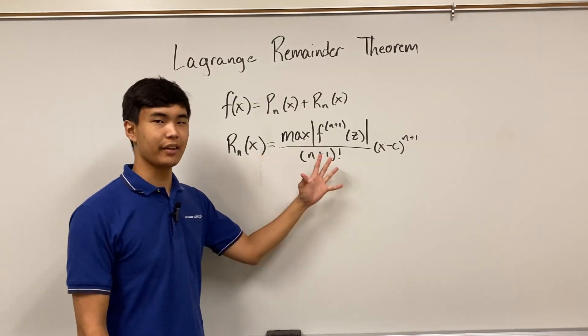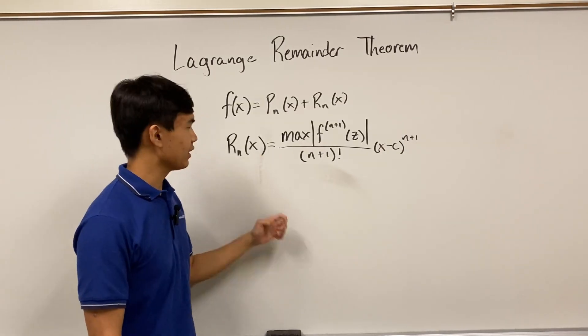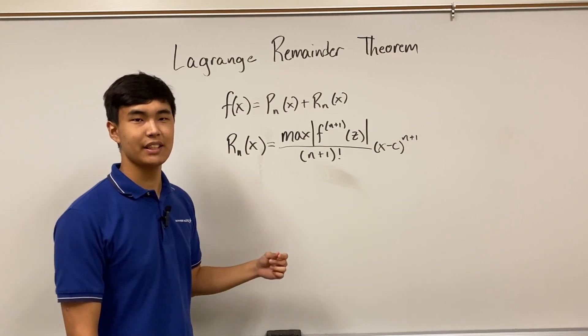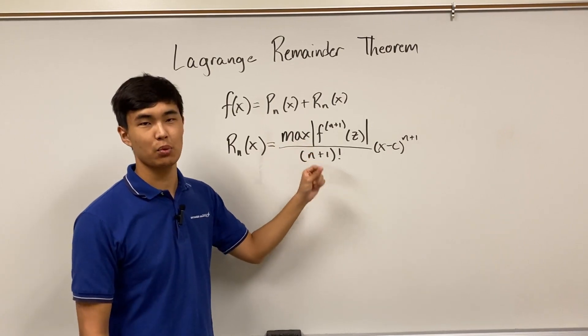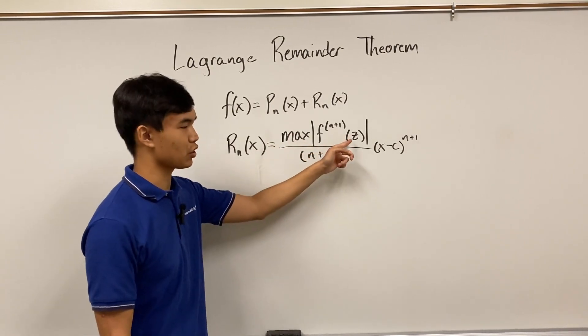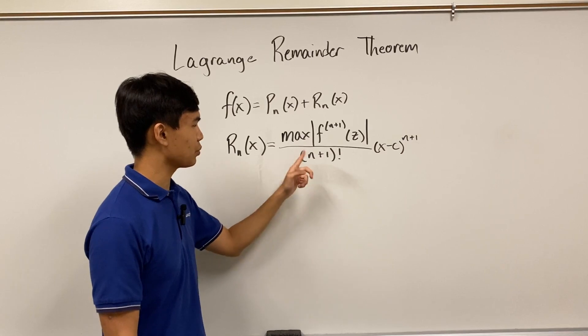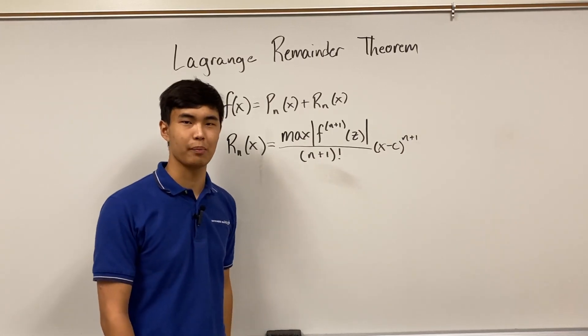And this is how the remainder of a Taylor series is expressed. So this reads the maximum value of the remainder for a Taylor series of n terms is equal to the maximum value of the n plus one derivative evaluated at the special value z divided by n plus one factorial times x minus z to the n plus one power.